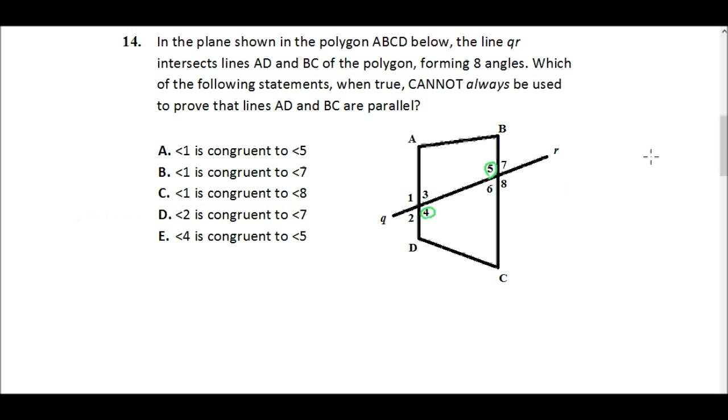All right, so this question is talking about this polygon here with its four vertices, and then this line QR that runs through the polygon. And this line QR that runs through it is called a transversal. So I'll write that down, if I can get my pen working here. So that's a transversal.